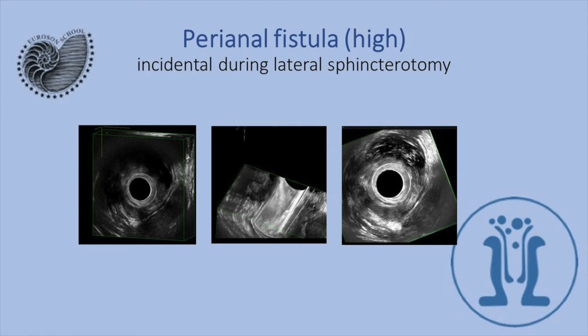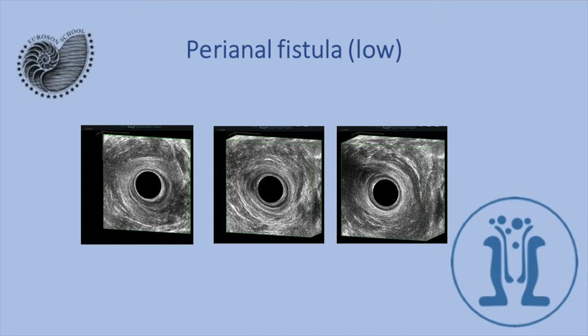Here we see a high anterior fistula which was found incidentally during an internal sphincterotomy. Here is the fistula. And here is a low anal fistula — we see the deep position of the external sphincter at the deep level, the internal opening, and the external opening of the anal fistula.